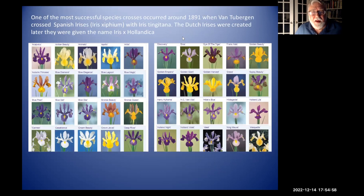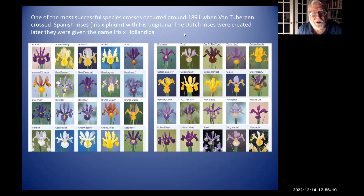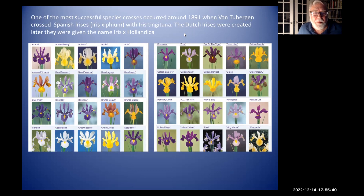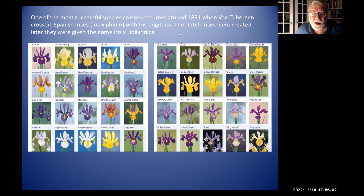Another group created by species crosses was the Dutch irises. Van Tubergen took the Spanish irises - Iris xiphium, which were fairly tall with small flowers and bloomed late - and crossed them with Iris tingitana. The result was Iris xHollandica. All Dutch irises are Iris xHollandica: they bloom earlier and have larger flowers, but they're all species crosses. Because the American Iris Society doesn't register them, when I was putting together the Iris Encyclopedia, I placed them all in the species cross section classification.